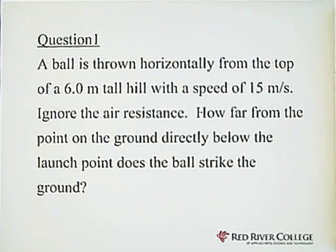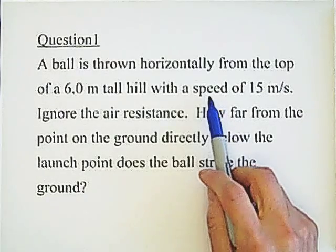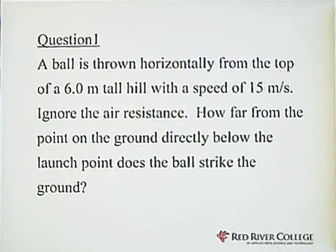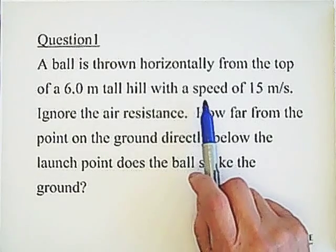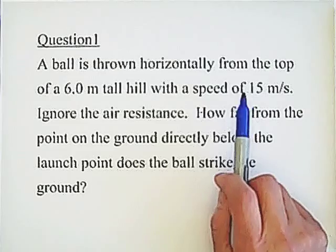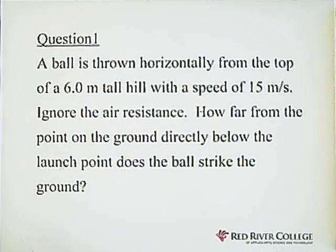So the given information is a speed of 15 meters per second, and the direction is horizontal. It means on the vertical there is no initial velocity. The height is 6 meters.